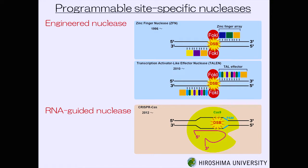The new system is artificial DNA cleavage. This technology was created around the year 2000 and has since led to Nobel Prize-level technologies. From the first, second, and third generations, these tools have become accessible to anyone. Various applications have been pursued in industry worldwide — including gene recombination, which can now be done more efficiently.